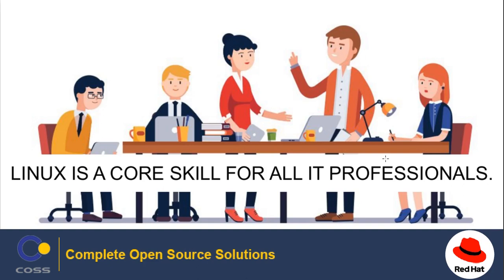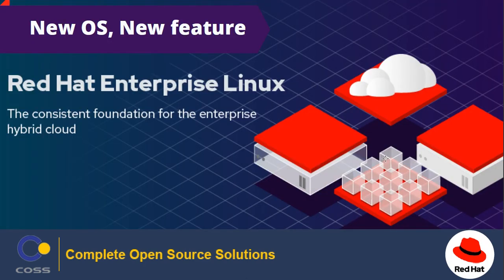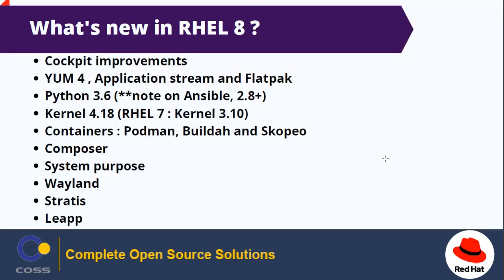In the IT industry, Linux is very popular and useful for all IT professionals. The latest version of Red Hat is version 8 — previously it was 7 and 6. New things added in RHEL 8 include the Cockpit web console, YUM 4, Python 3.6, a new kernel version 4.18, and new container services.